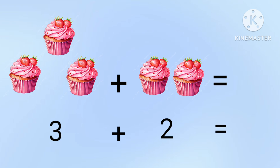Let's start counting. 1, 2, 3, 4, 5. There are 5 cupcakes. 3 plus 2 equal to 5.